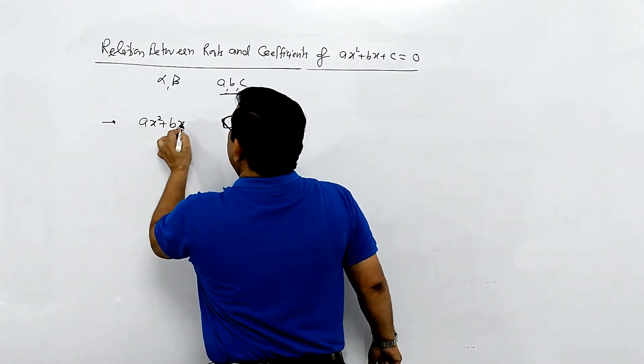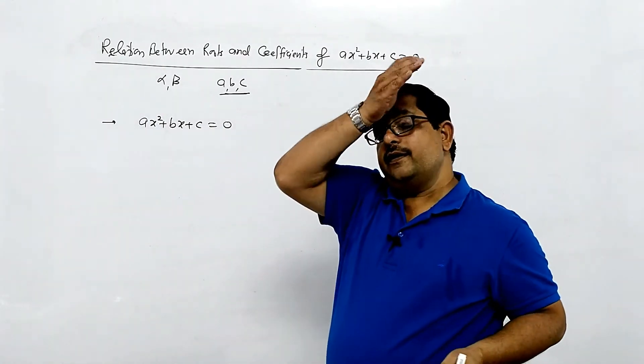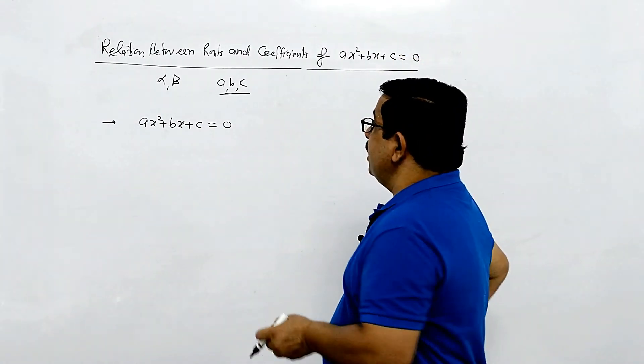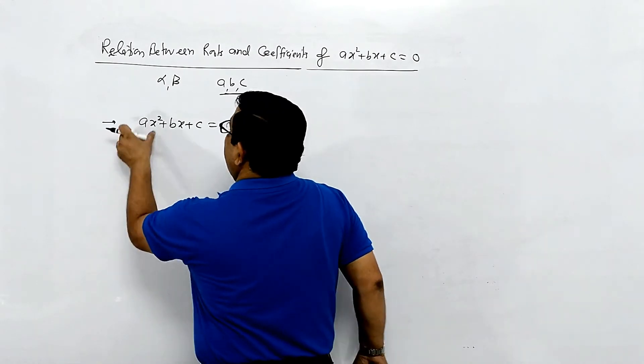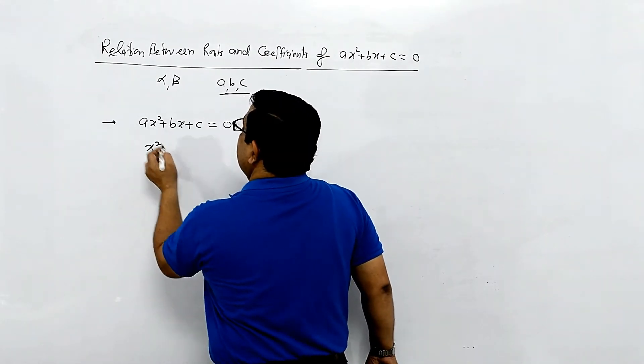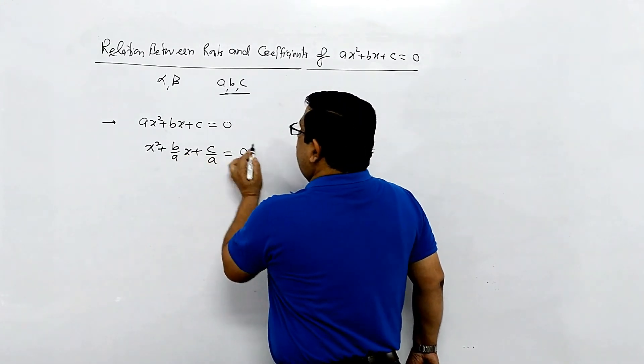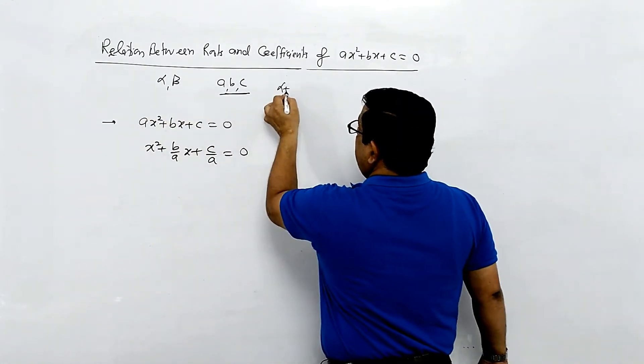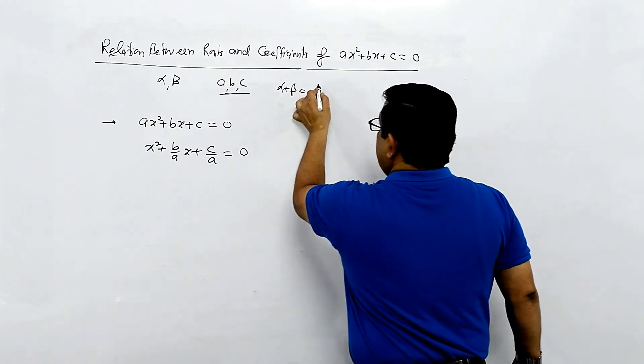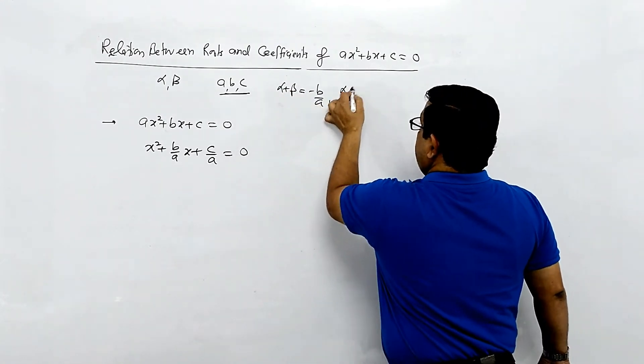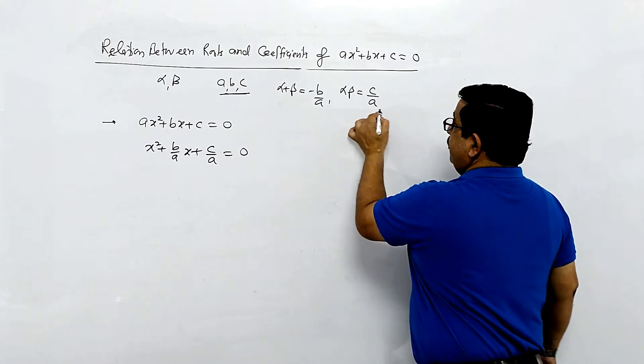This is the same quadratic equation. Suppose I divide by a, then x² plus (b/a)x plus (c/a) equals 0. Now, sum of roots is minus b/a, product of the roots is c/a. These are both values.